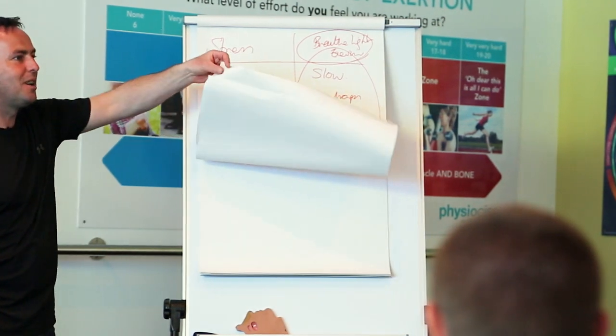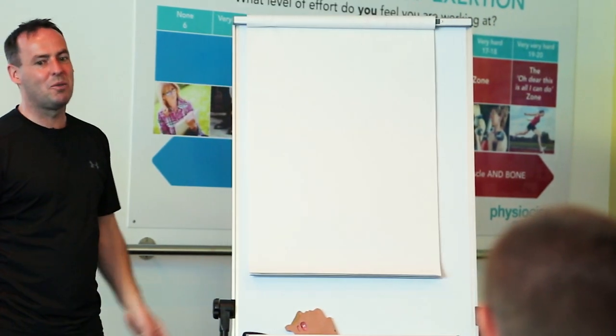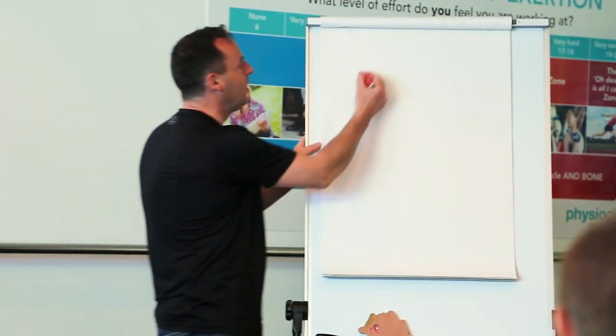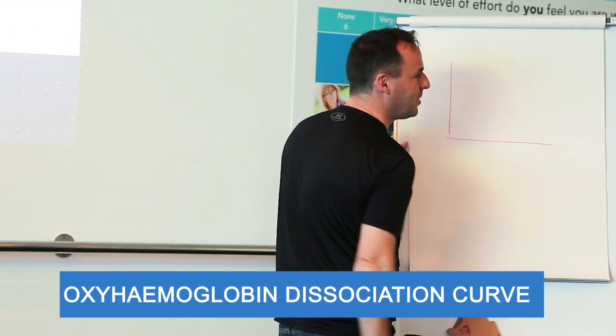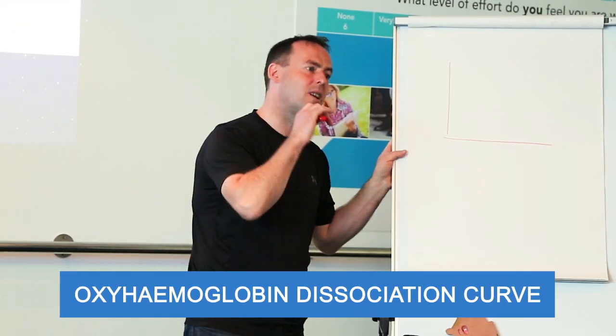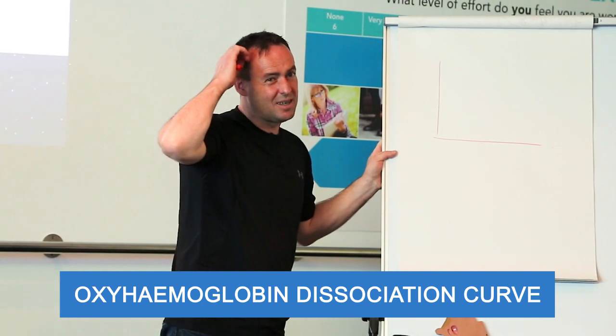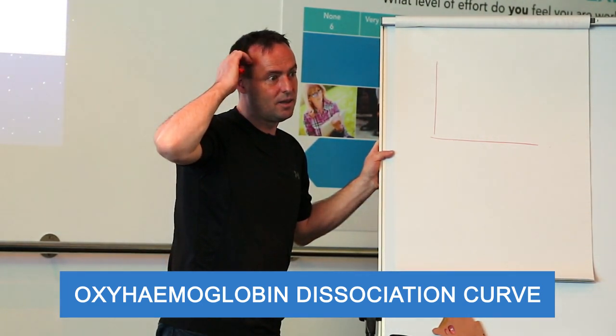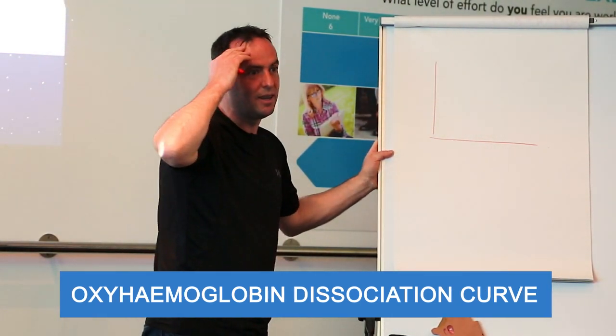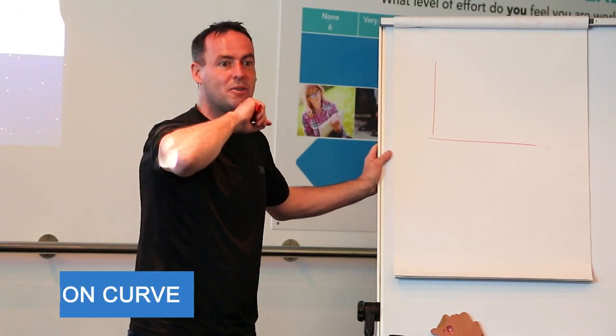So let's look at how oxygen is delivered from the red blood cells. There's what's called the oxyhemoglobin dissociation curve. I only want to go into it briefly. Has anybody heard of it before? You have. Nobody else, no?